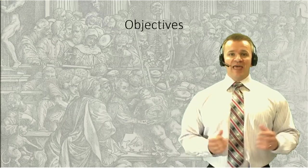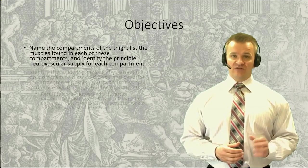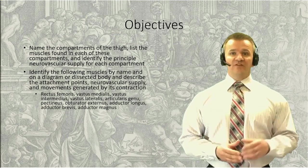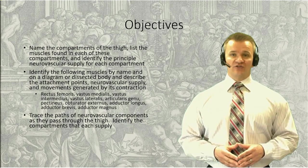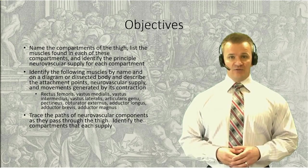In the previous class, we discussed the framework of the thigh by looking at the os coxae and the femur. This lesson builds onto that framework by looking specifically at the anterior and medial compartments of the thigh. The posterior compartment will be covered in the following lesson. We'll start with an overview of the three compartments and their properties, then discuss the muscles found in each, and finish with a look at the neurovascular supply to the anterior and medial compartments.